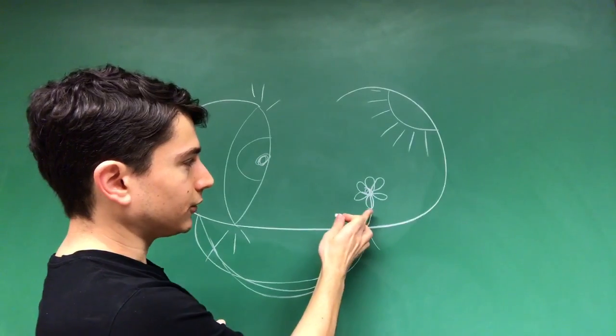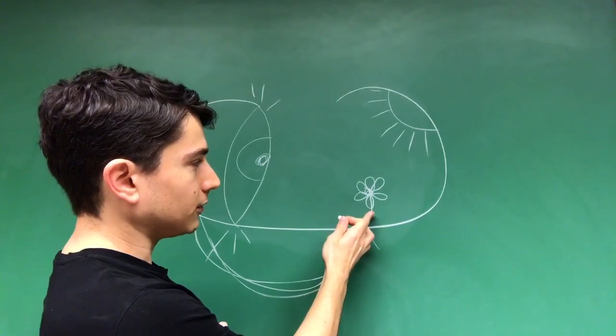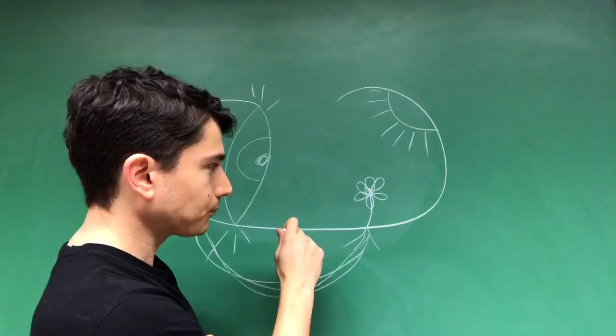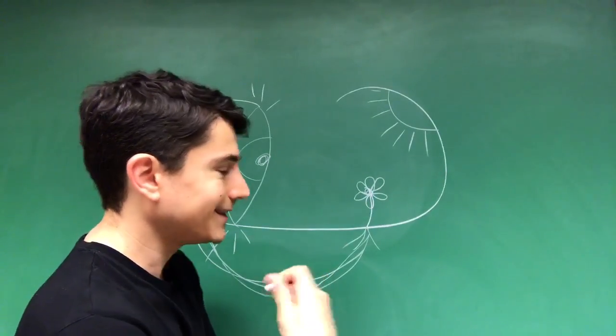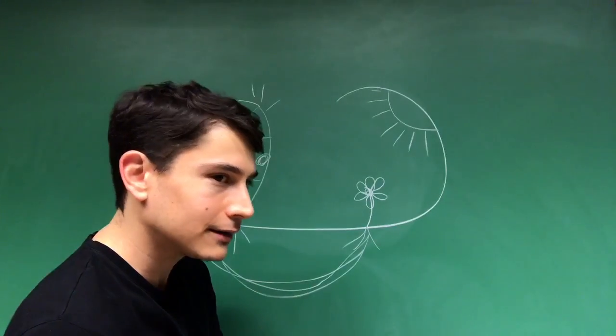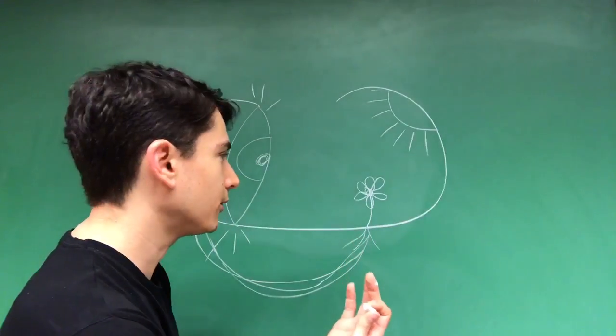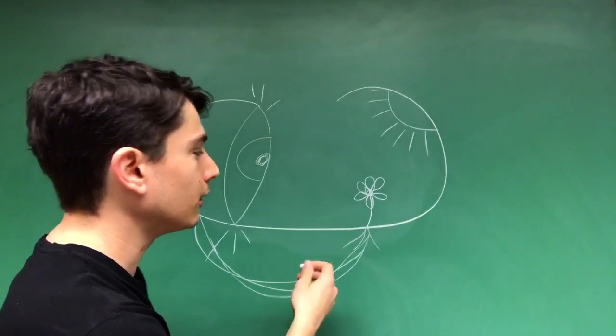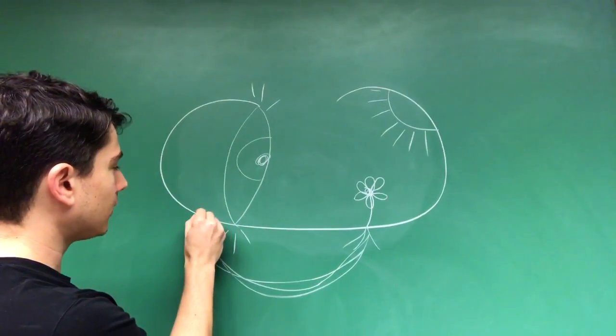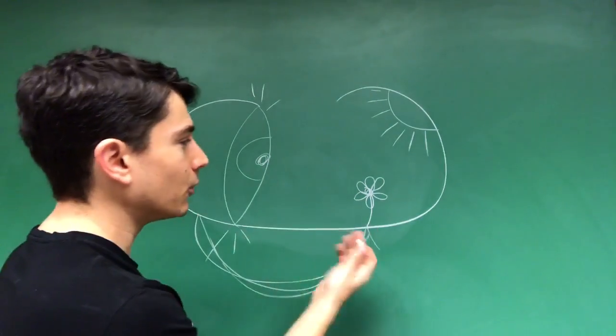So for us to truly understand a living phenomenon, a flower, we can't just look at its outward appearance. We have to participate in the dynamic archetypal process that brought it forth. So what Goethe asks us to do is, in observing this flower, come to understand how it became what it is.